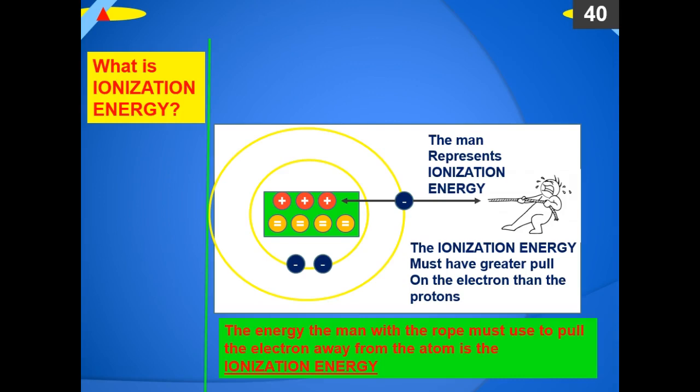What is ionization energy? Ionization energy is effectively how much energy it takes to pull an electron away from its atom. Another way of stating that, it's how strongly an atom wants to hang on to its electrons.